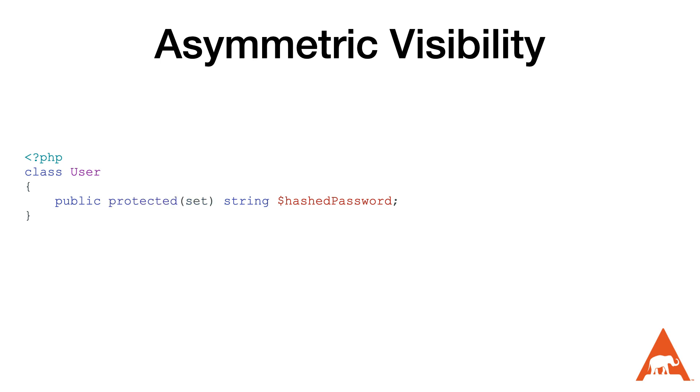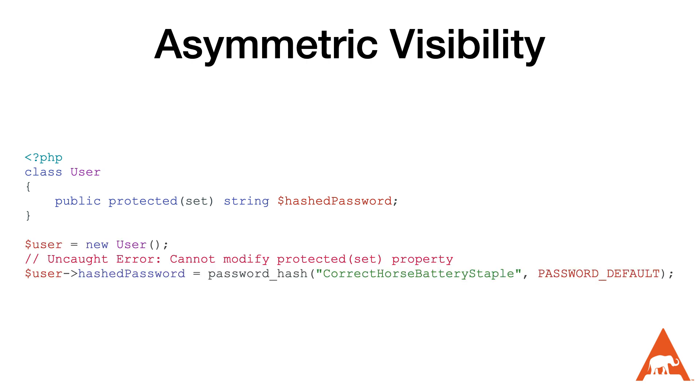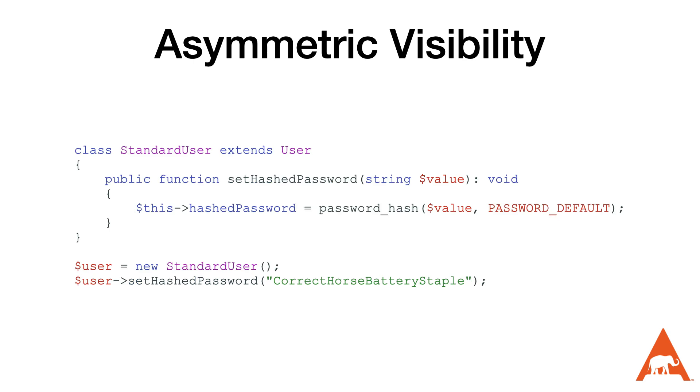Like the code on the screen — if we try to write to it we'll get a type error, but we can still define a child class that can modify the property.